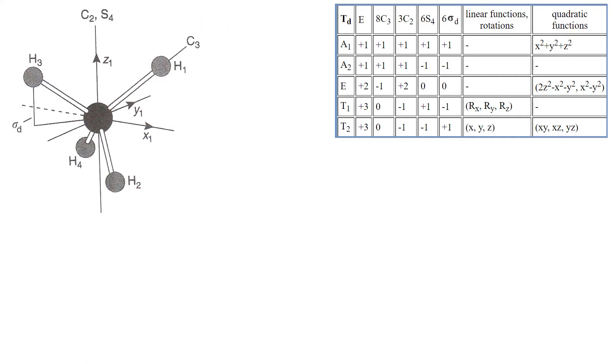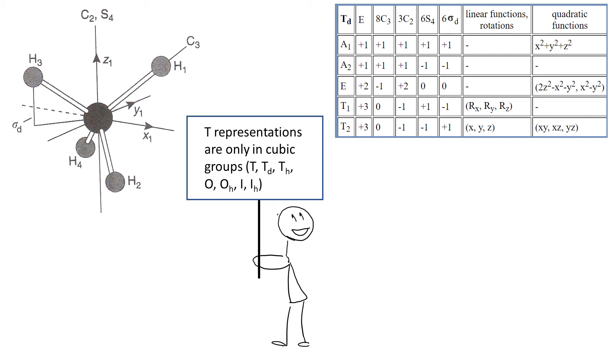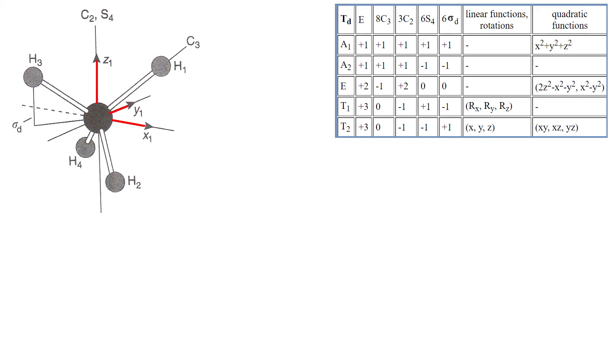In fact, that is exactly what we are going to do for TD group. TD group has not only E representation, but also T representations. T representations are only in cubic groups. T stands for triple, so we have three things interconverting into one another.